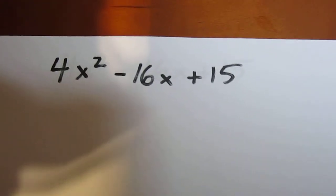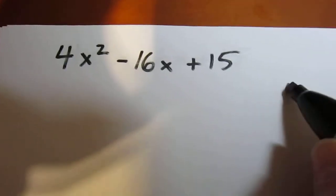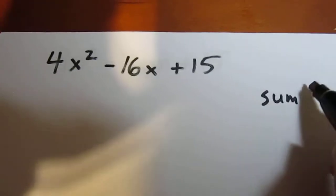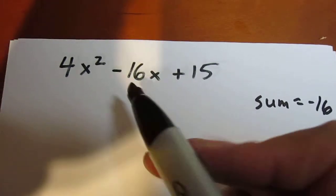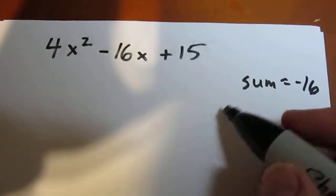Our next question is an opportunity for decomposition. The sum is going to be negative 16, and the product, that's right there, is going to be 4 times 15, which is 60.